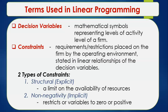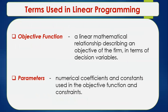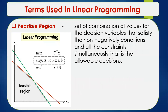Another key term is the objective function — a linear mathematical relationship describing an objective of the firm in terms of decision variables. In linear programming, we are normally faced with two decisions: either maximize profit or minimize cost. Parameters are the numerical coefficients and constants used in the objective function and constraints.